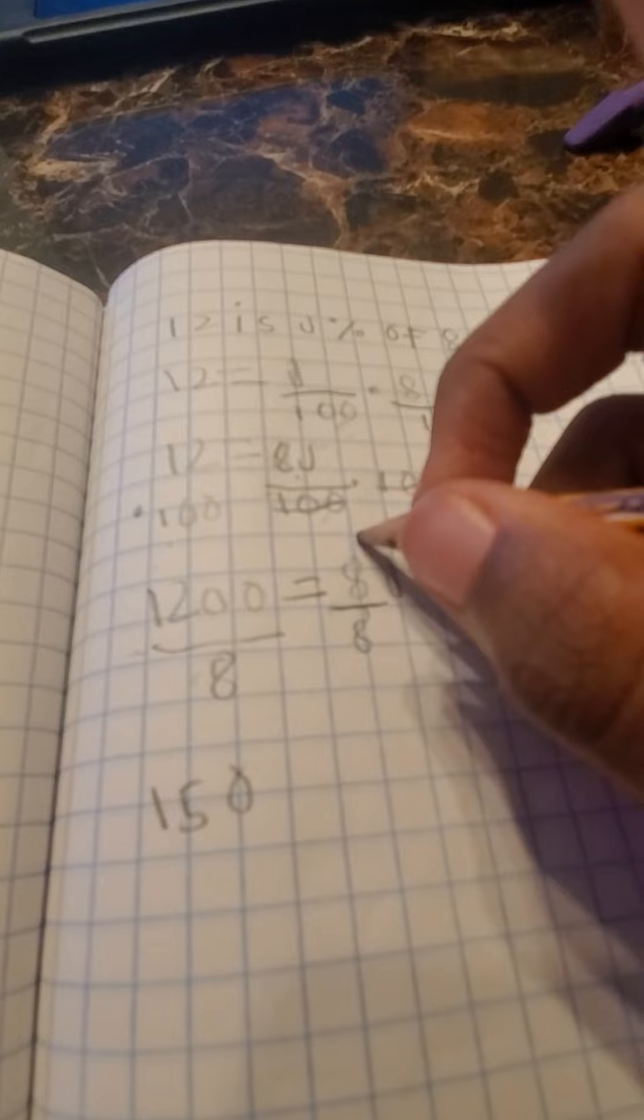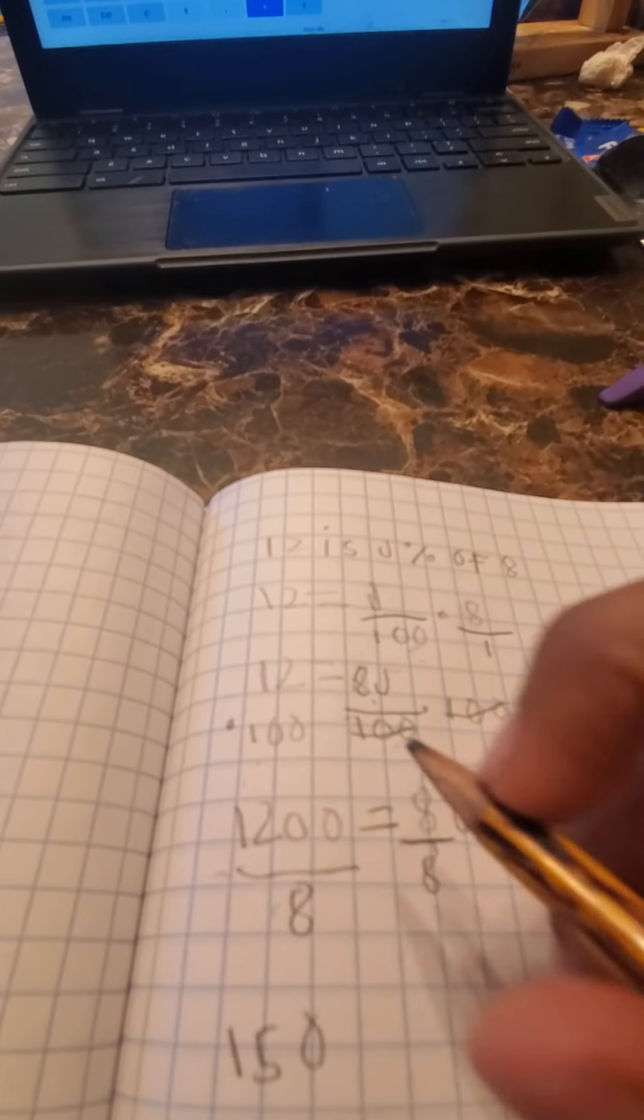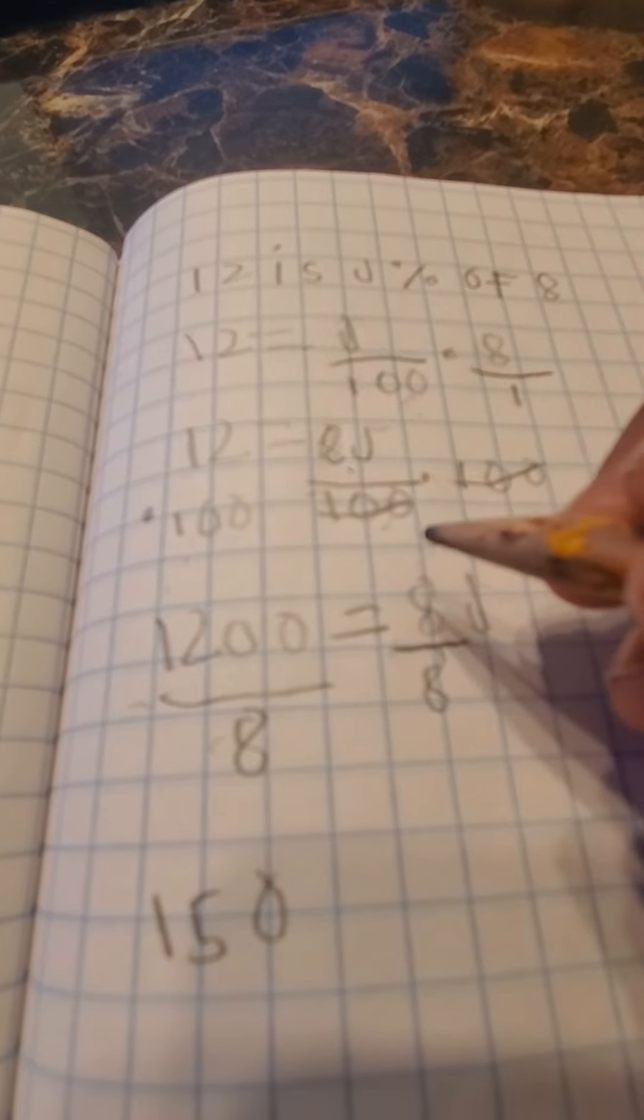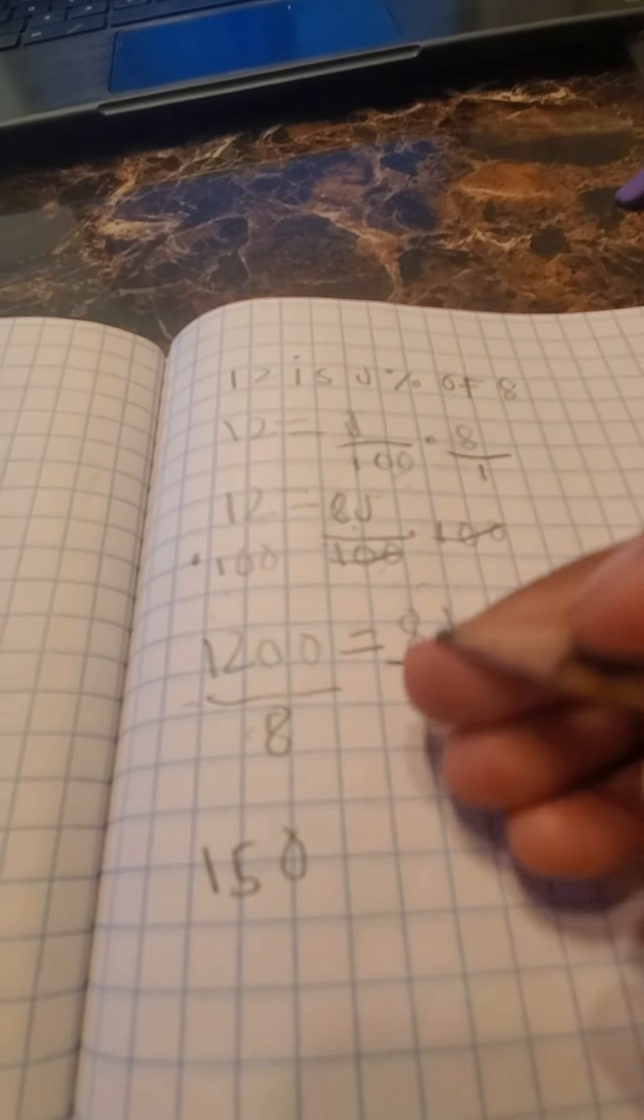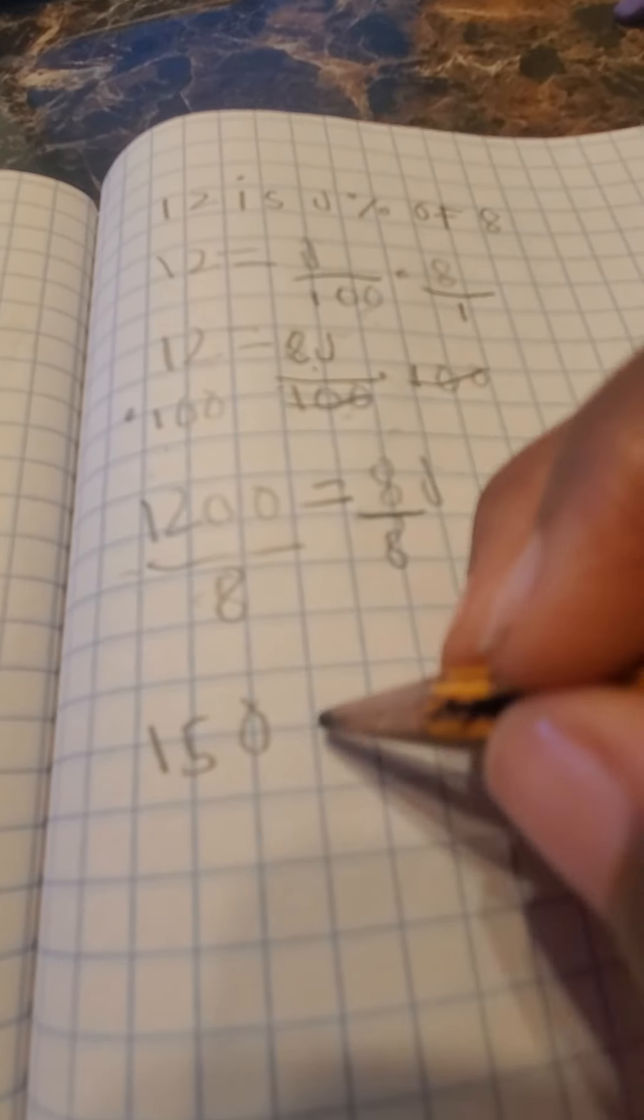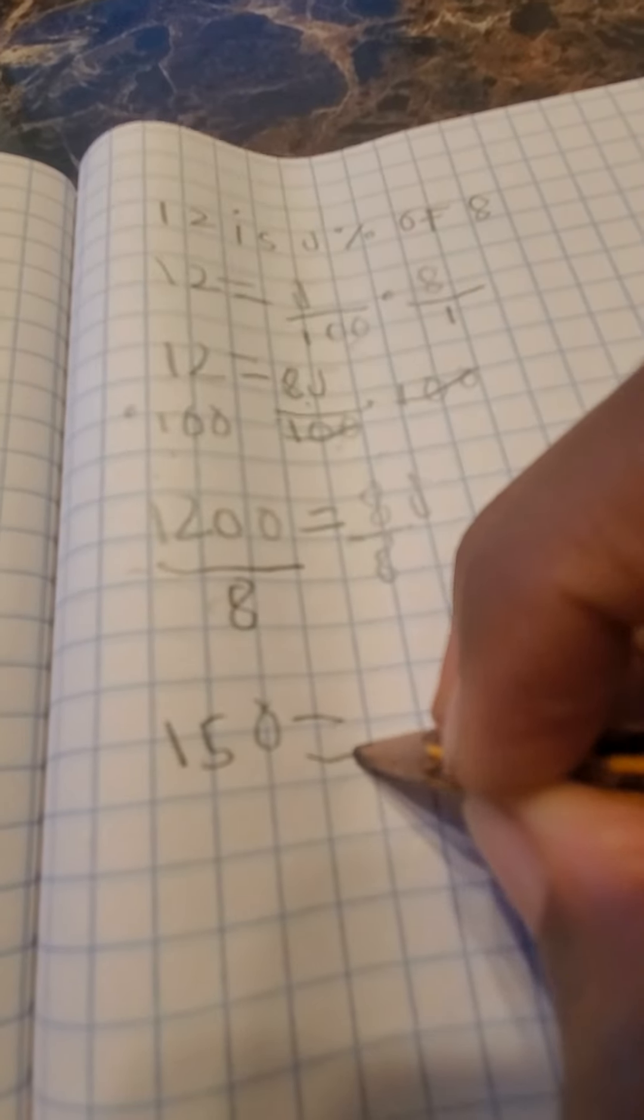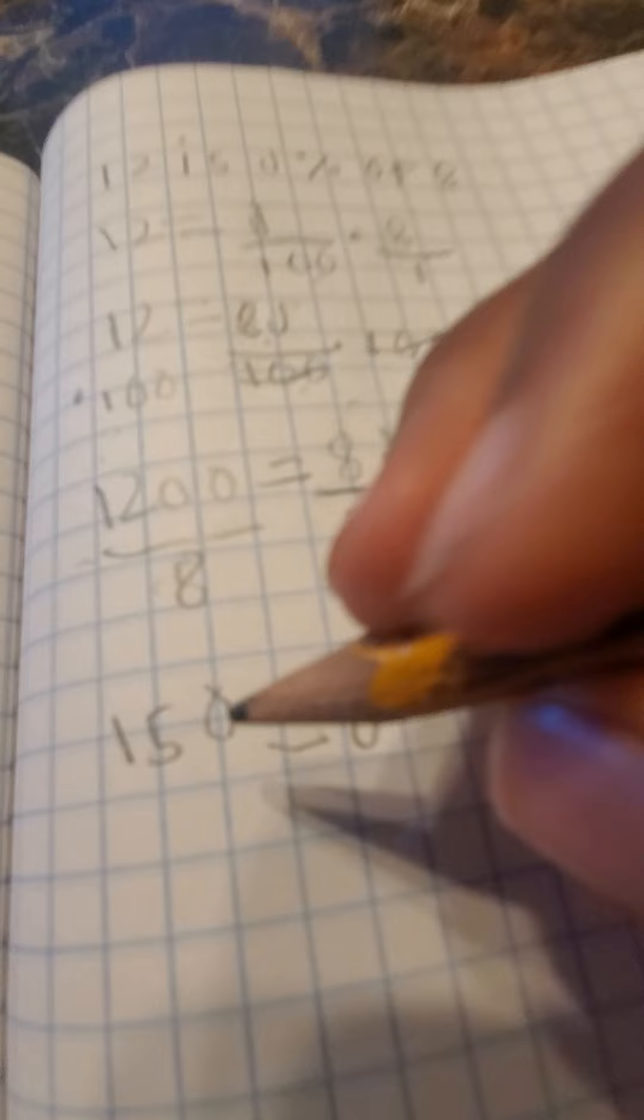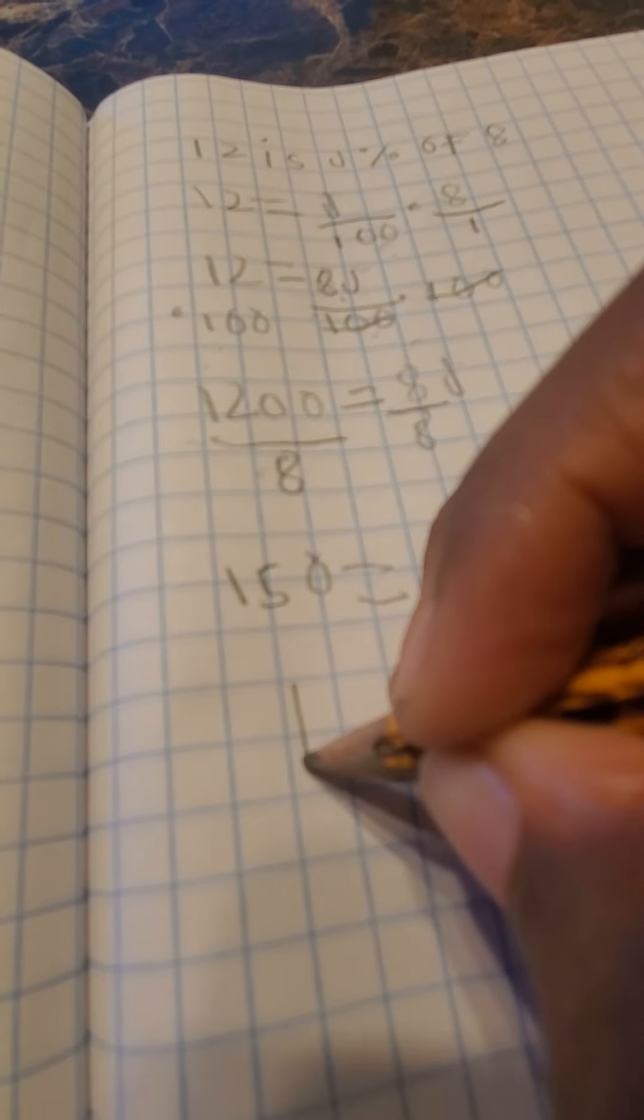And always remember, any number divided by itself is 1. So 150 equals J. Now you can reposition that at the end, so J equals 150.